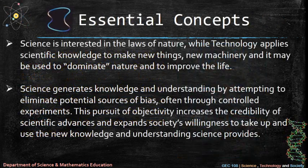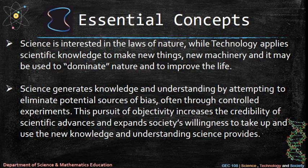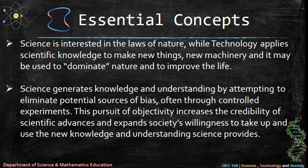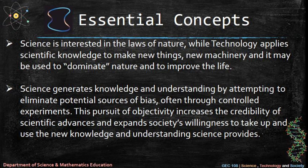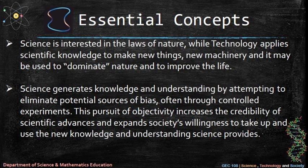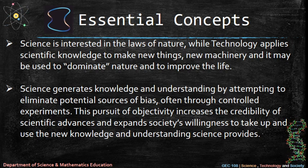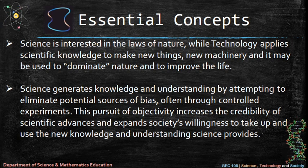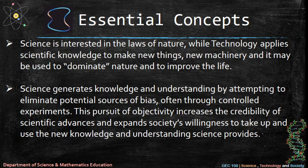Essential concepts: science is interested in the laws of nature, while technology applies scientific knowledge to make new things and new machinery, and it may be used to dominate nature and to improve life. Science generates knowledge and understanding by attempting to eliminate potential sources of bias, often through controlled experiments.